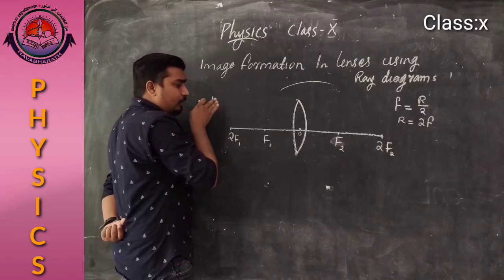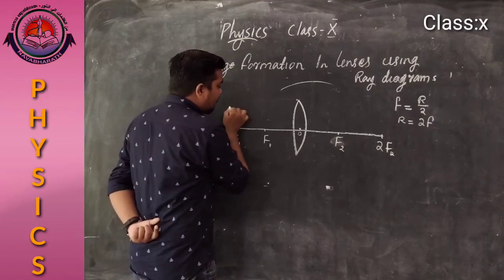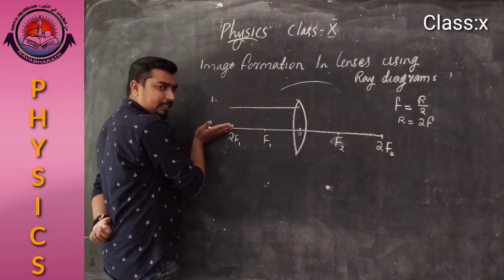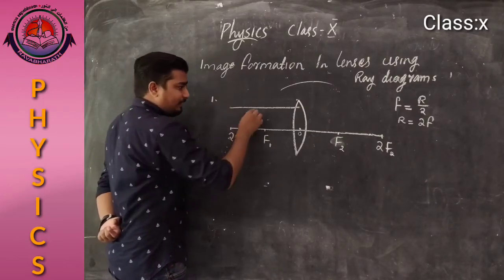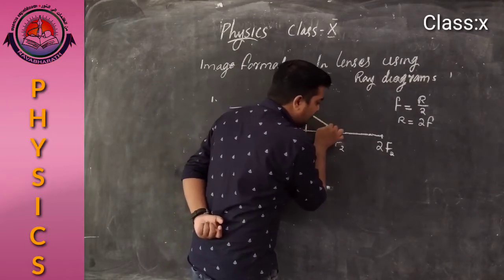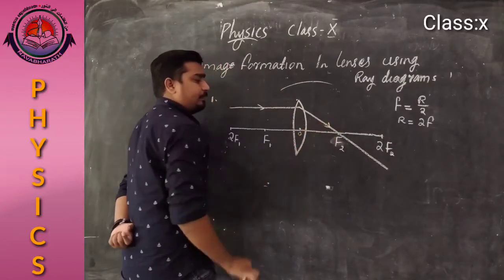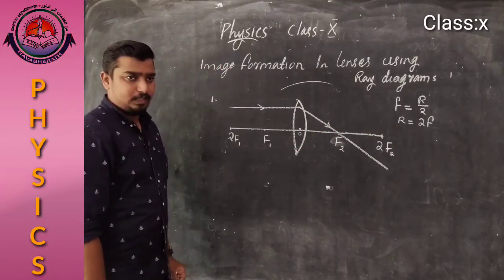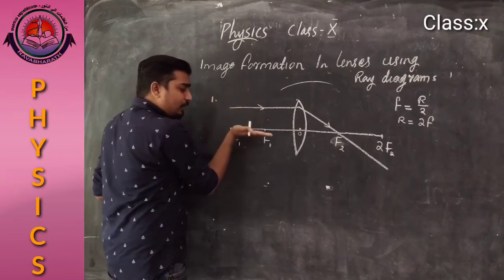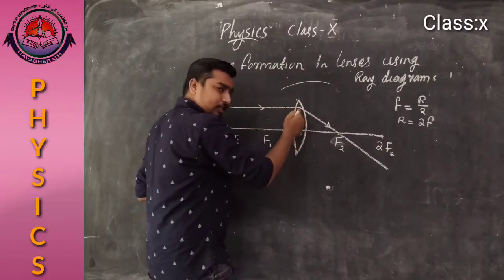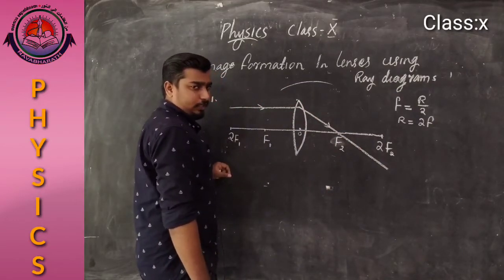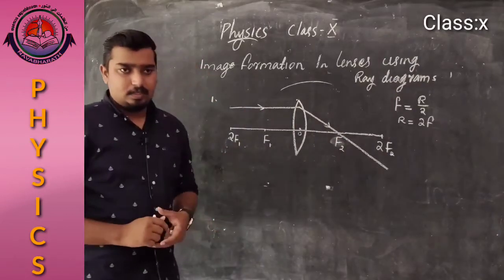The first rule is: when a light ray is coming from an object parallel to the principal axis, after refraction the refracted ray passes through the principal focus F2. This is the first rule for a convex lens.